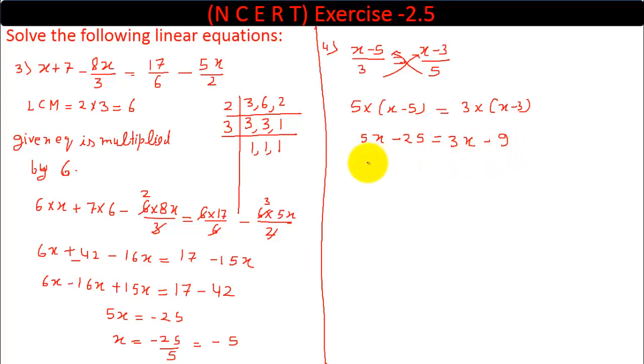Like terms on one side: 5x minus 3x equals. On the right side we have minus 9 already, and here on the left side minus 25 becomes plus 25. 5 minus 3 is 2x equals 25 minus 9 is 16, and x equals 16 upon 2 equals 8.